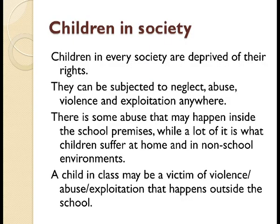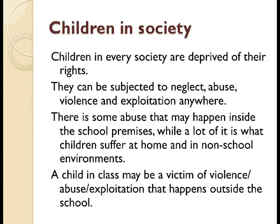There is also abuse that may happen inside school premises. This may be in the form of bullying, violence, or physical punishment given by teachers. These are just three examples of the kind of abuse which may happen in school premises. But it's not happening only in school — a lot of what children suffer is at home and in other non-school environments too. A child in class may be a victim of violence, abuse, or exploitation happening both inside and outside the school.